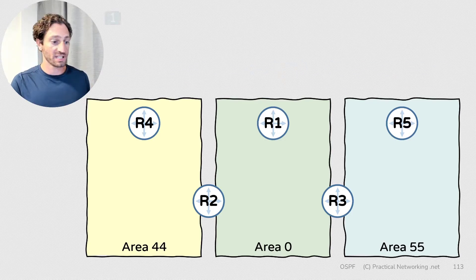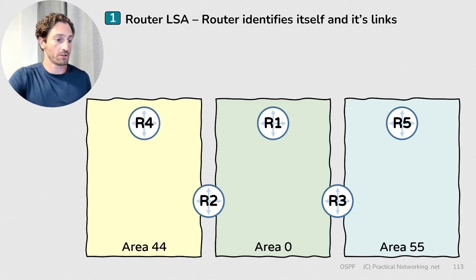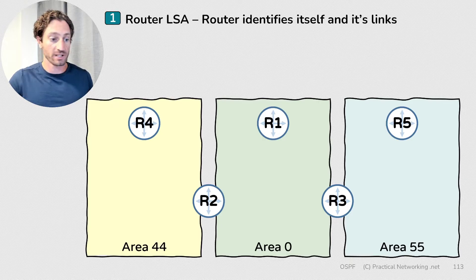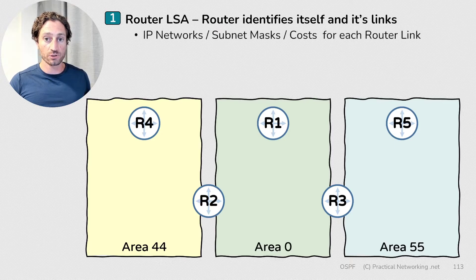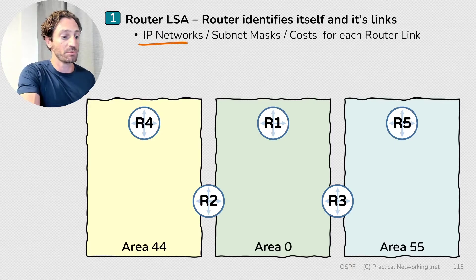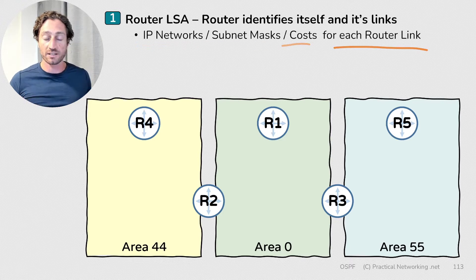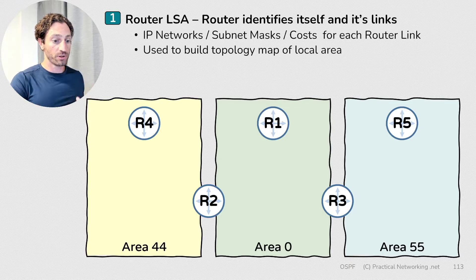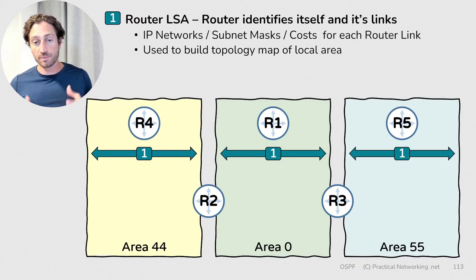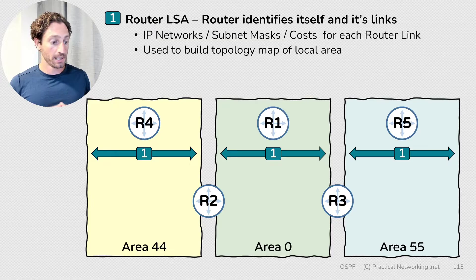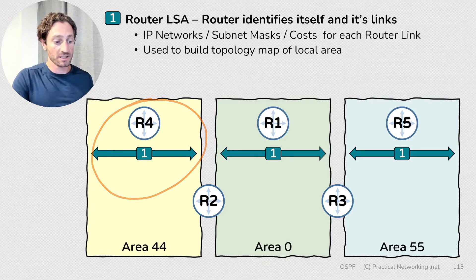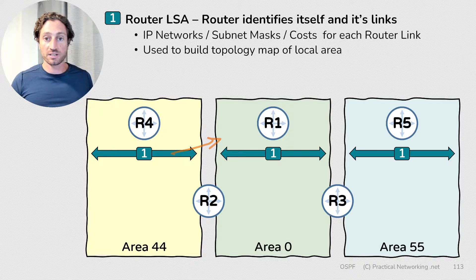The first LSA we're going to talk about is a Type 1 LSA. Type 1 LSAs are known as Router LSAs, and they'll be sent by every single OSPF router. They identify the router and the links it is attached to, including the IP network, subnet mask, and the cost for each link. These Type 1 LSAs are used by other routers in the area to rebuild a topology map of the local area. Each router sends a single Type 1 LSA, and it is confined to the area in which it was originated — meaning Type 1 LSAs from Router 4 will not make their way into Area 0 or Area 55.